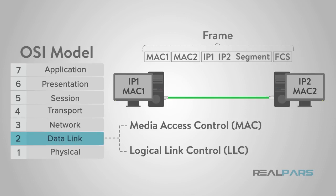An example of the MAC layer includes 802.11 wireless specifications as well as Ethernet. At the data link layer, the data passes to or from the final layer in the OSI model, which is the physical layer.